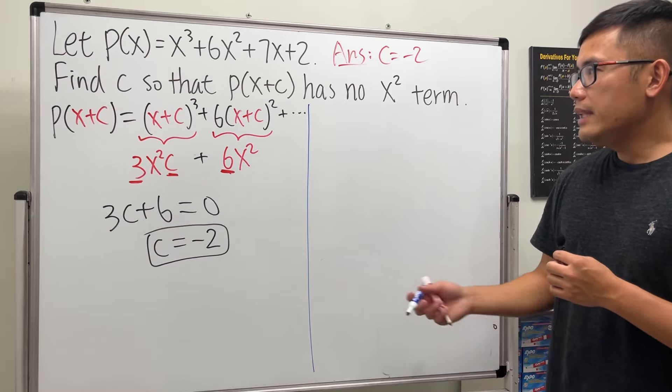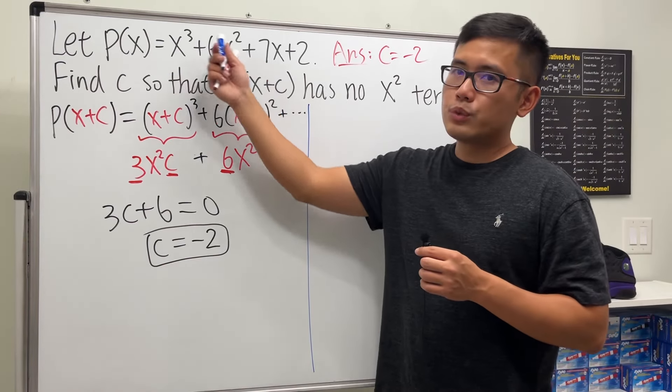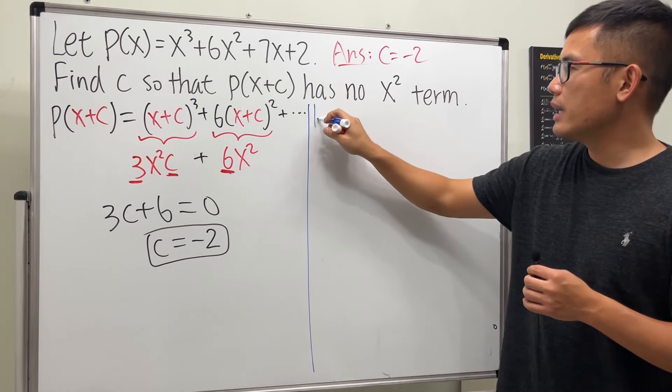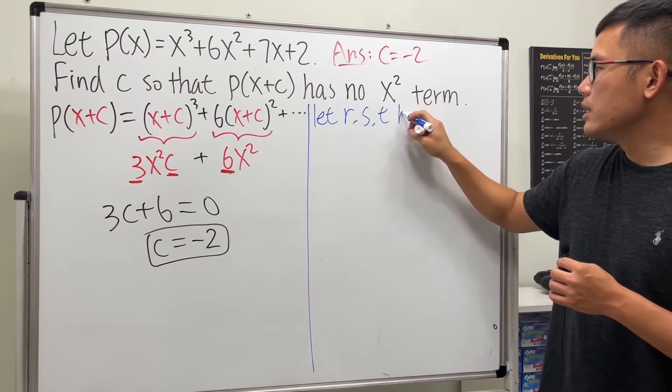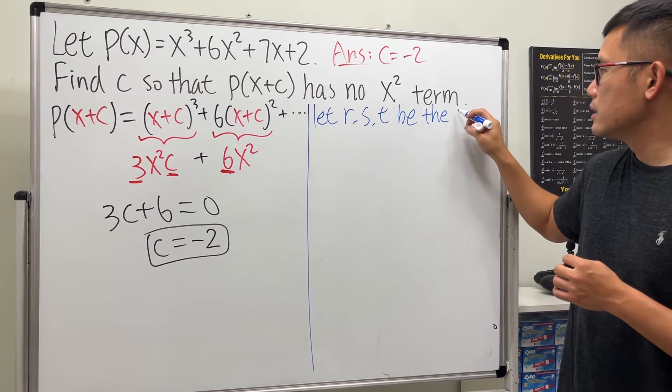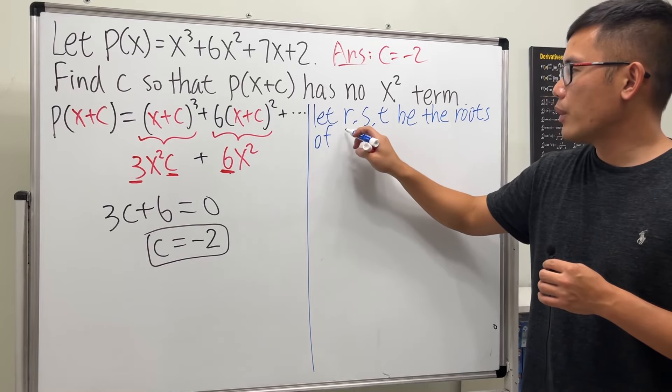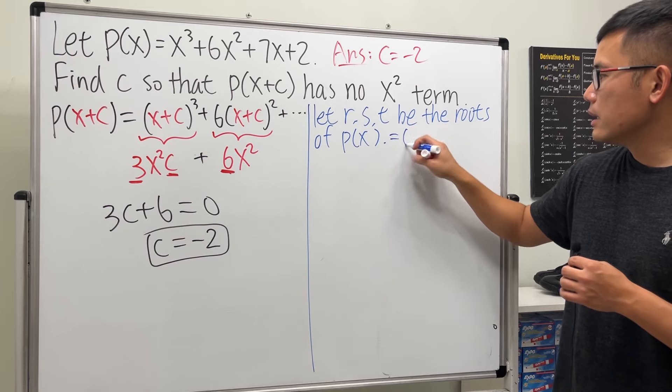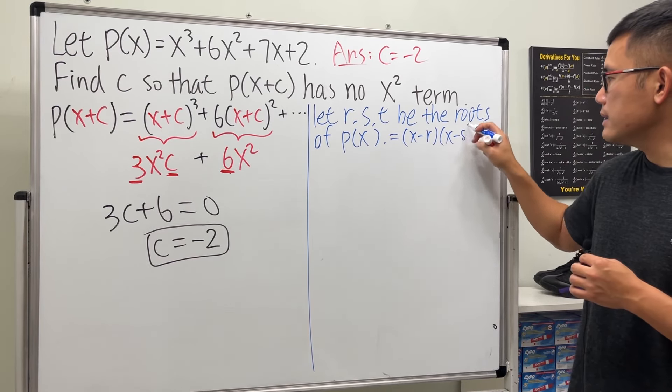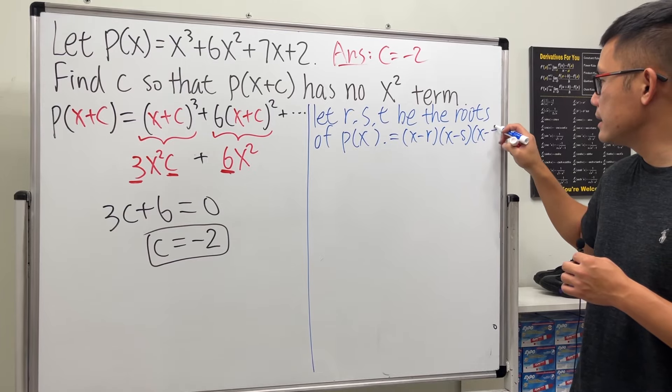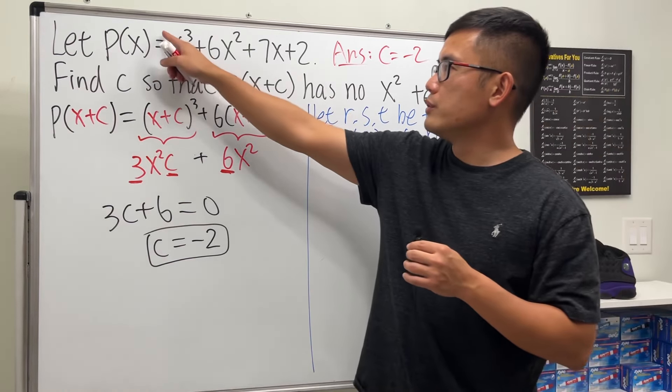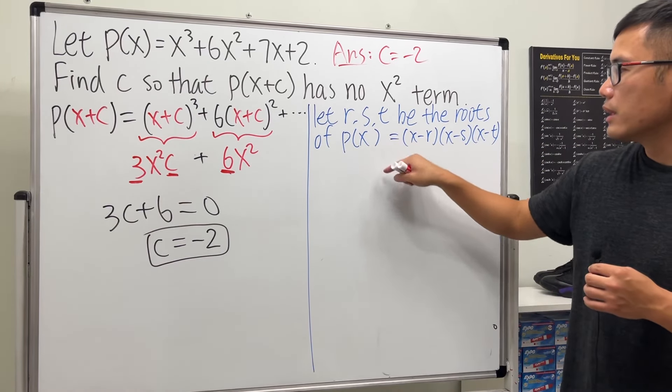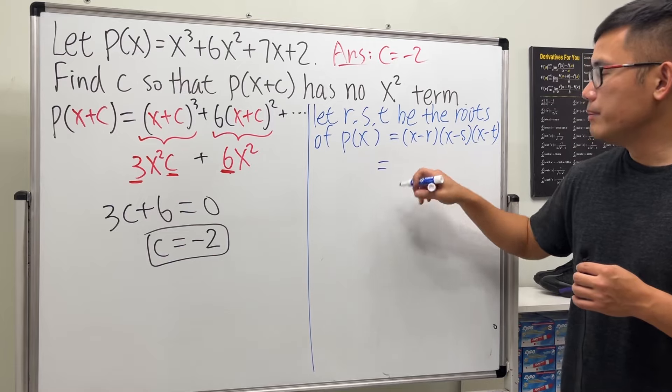Suppose we have this polynomial, and let's say it has three roots. Let r, s, t be the roots of our original P(x). That means we can write this as (x-r)(x-s)(x-t). Luckily, the coefficient of x³ is 1, which is why it's just this.